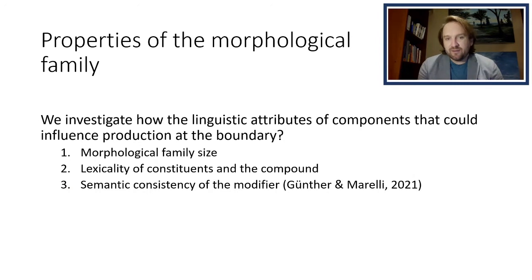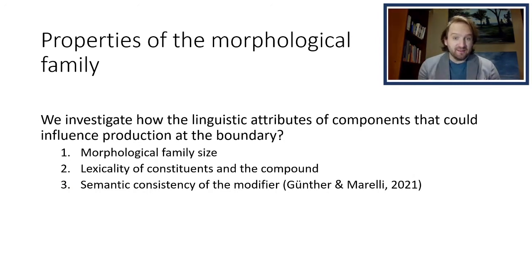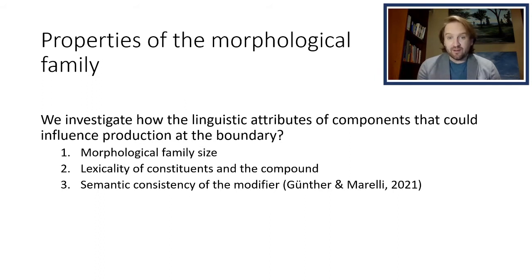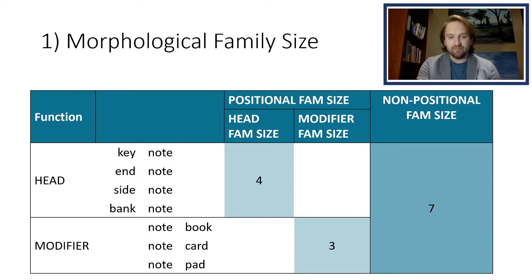The properties of the morphological family that we'll be looking at today are the morphological family size — the type count of the number of members within that family — the lexicality of constituents and the compound as a whole, and the semantic consistency of the modifier. This is taken from Gunter and Morelli, 2021, and I'll be explaining this a little bit later in the talk.